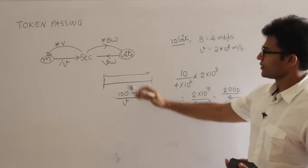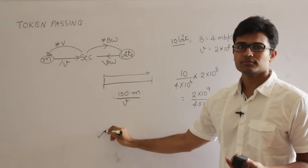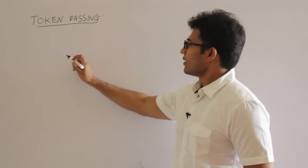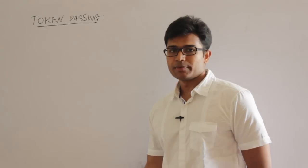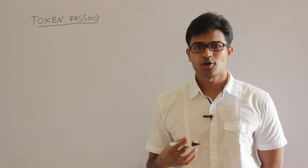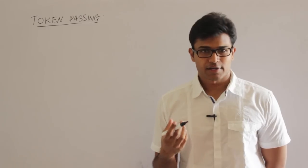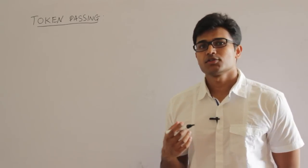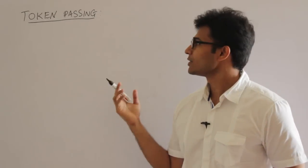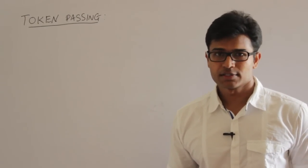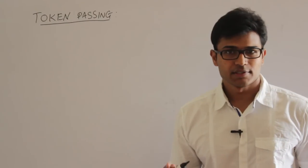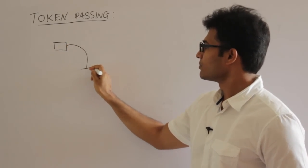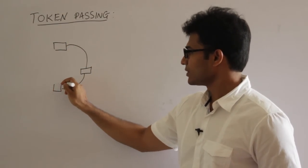Now let's see the token passing method with these basics. In CSMA/CD, the problem is when more than one station tries to send data, there is a collision, and efficiency falls down. To stop collisions from happening, we use the token passing method. Token passing could be discussed in bus topology too, but we only have token ring in the syllabus, so I will take the ring topology.